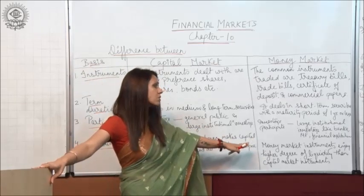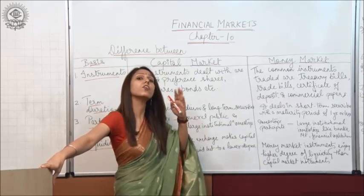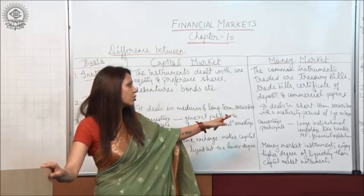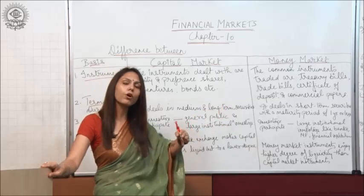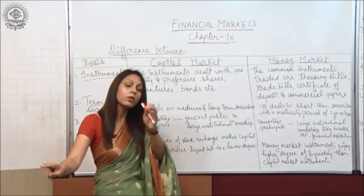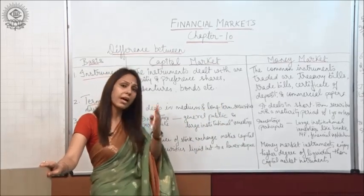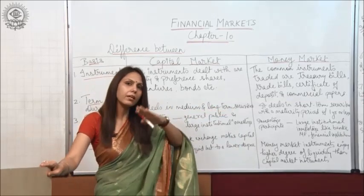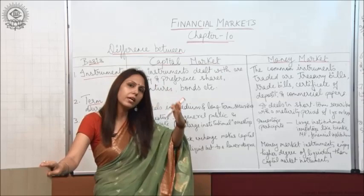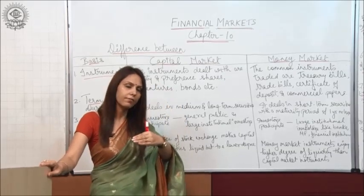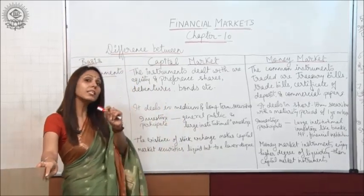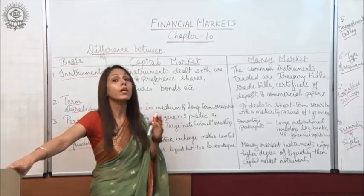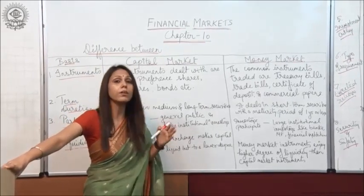Whereas in money market instruments, there is a high degree of liquidity, because they are instruments meant for a shorter period of time. The maturity period is very less — one year or less than that — so liquidity is very high, meaning they are easily convertible into cash whenever required.